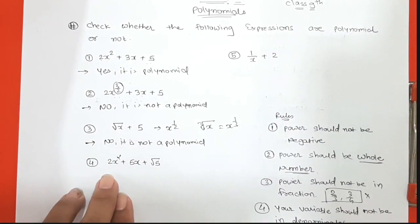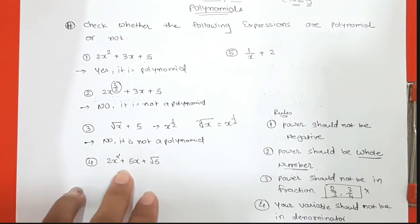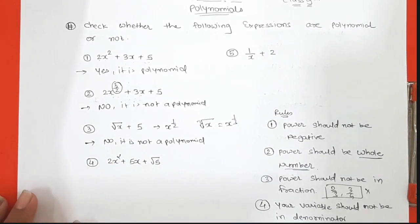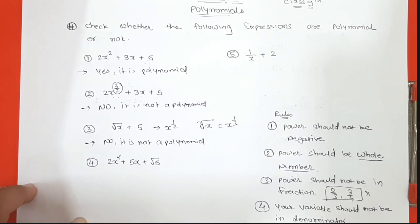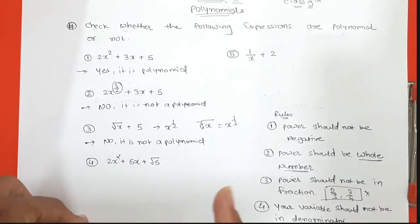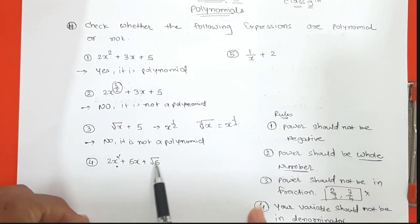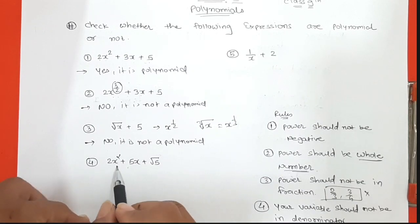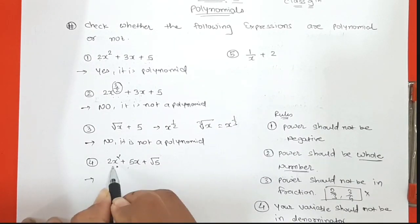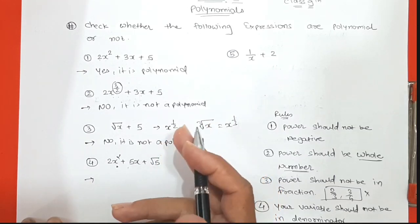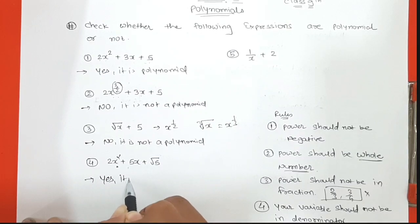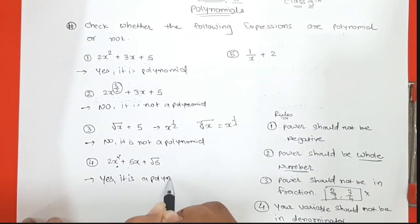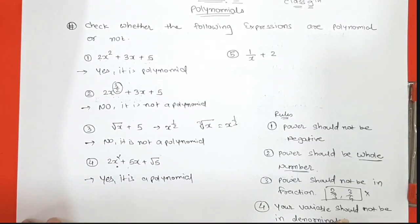The fourth expression is 2x squared plus 5x plus root 5. Students might think that since there is a root, it is not a polynomial. But remember — the rules apply only to the variable, not to the constant term or coefficient. The variable x has powers 2 and 1, which are whole numbers, not negative or fractional. So yes, it is a polynomial.